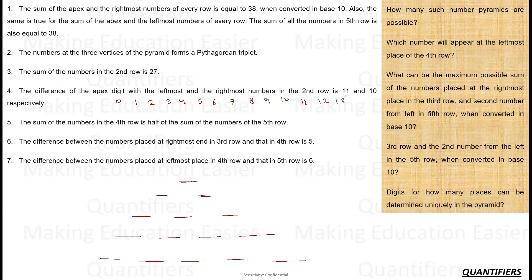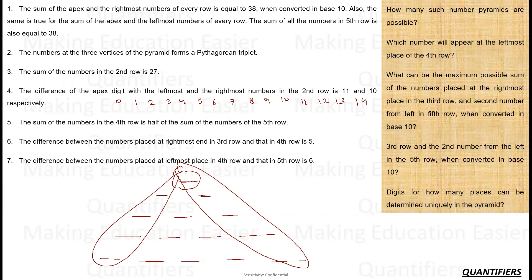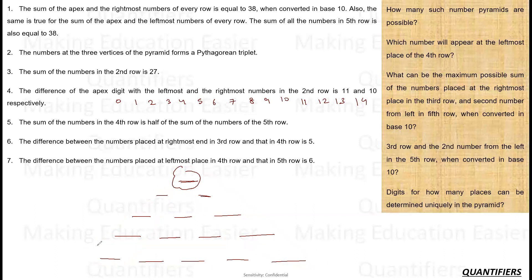Now, the first condition: the sum of the apex — the topmost value — and the rightmost numbers of every row equals 38. The sum of the apex and the leftmost values is also 38, and the sum of all the numbers in the fifth row is also 38. So these three sums will each equal 38.